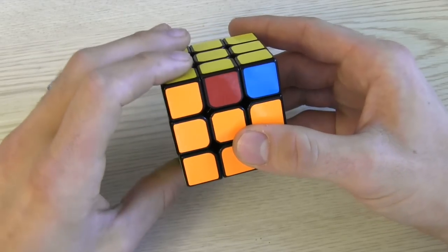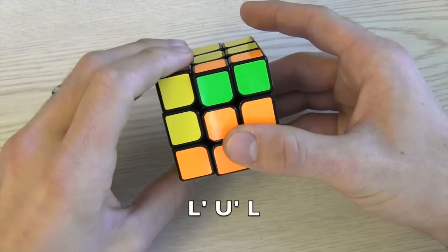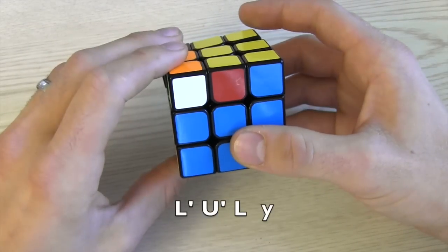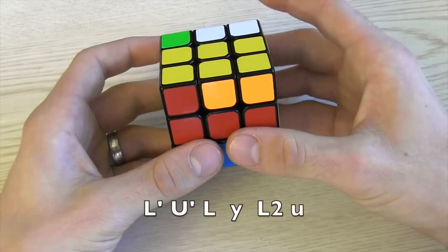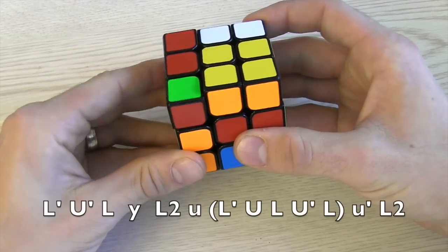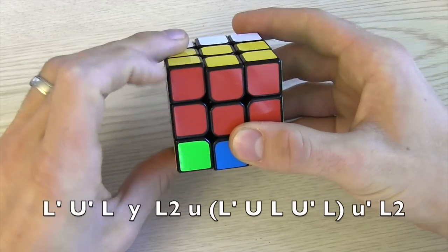Then instead of R U R prime we just do with the left hand L prime U prime L. Turn to the side that had the headlights. Then L2 small U L prime U L U prime L small U prime L2.